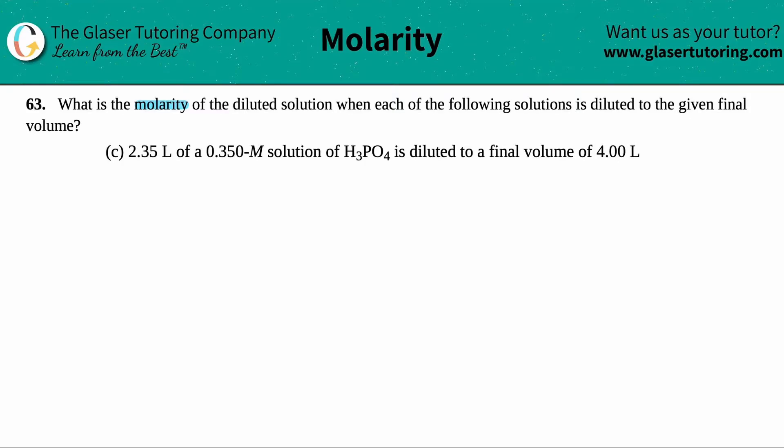And then we have letter C. So in this case, we have 2.35 liters of a 0.350 molar solution of phosphoric acid, which is H3PO4, and that's all diluted to a final volume of 4.00 liters.